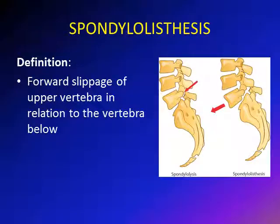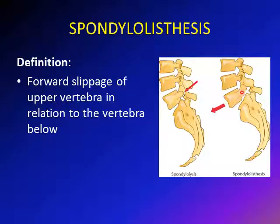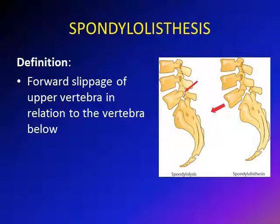Spondylolisthesis is forward slippage of a vertebra in relation to the vertebra below. In spondylolysis, the vertebrae above and below are still aligned despite the pars interarticularis defect. When the relationship becomes disturbed and the vertebra starts to slide forward due to stresses, that is called spondylolisthesis. The L5 vertebra becomes anterior to the sacrum, and the amount of slippage is described as a percentage of the vertebral width.